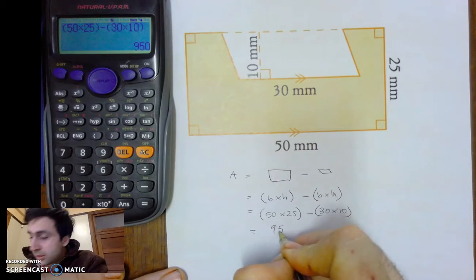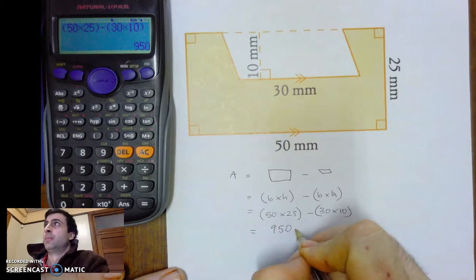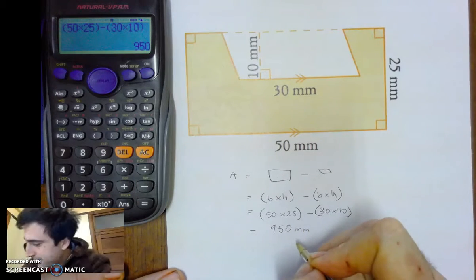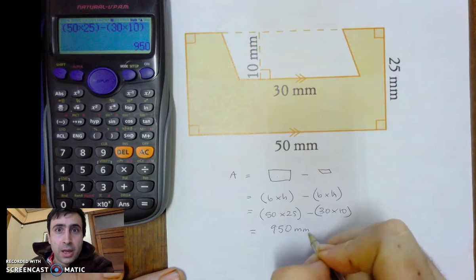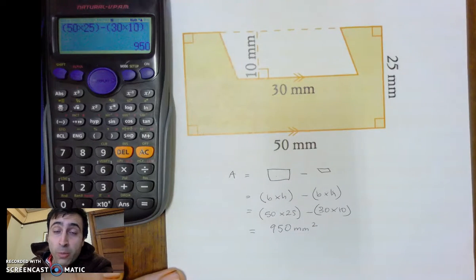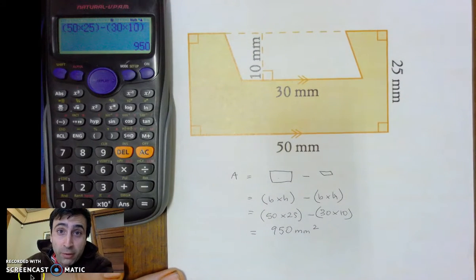950 millimetres squared. Because it's an area. So, I hope we've adequately compensated for our composite shapes.